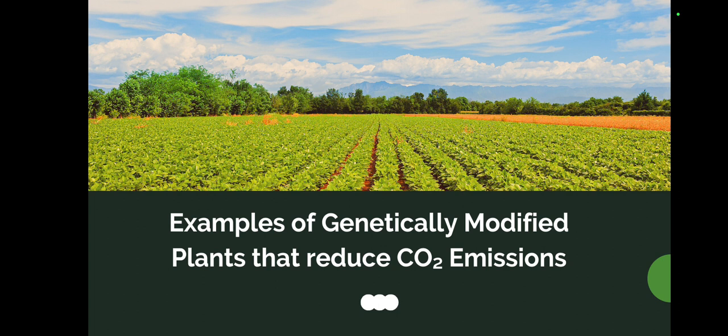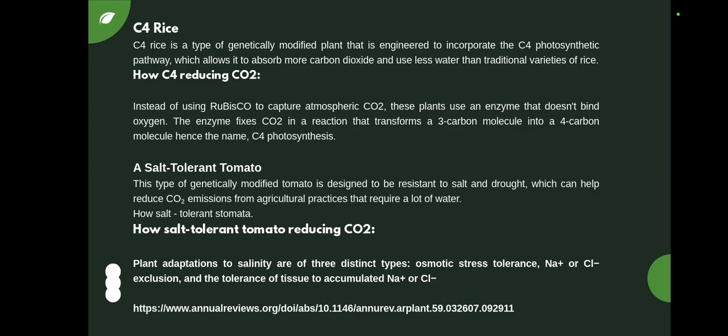Now we see which plants can be genetically modified to reduce CO2 emission. The first example is C4 rice. C4 rice is a type of genetically modified plant engineered to incorporate the C4 photosynthetic pathway, which allows it to absorb more carbon dioxide and use less water than traditional varieties of rice. This special type of rice absorbs more CO2 through photosynthesis than traditional varieties.